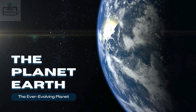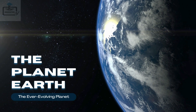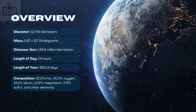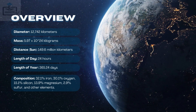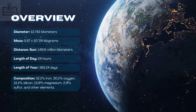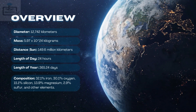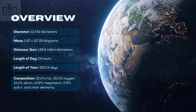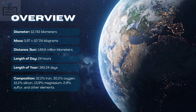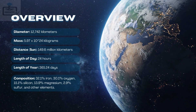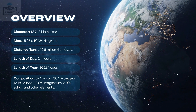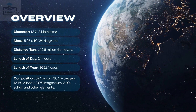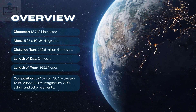3. The planet Earth, the ever-evolving planet. Overview: Diameter — 12,742 kilometers. Mass — 5.97 × 10^24 kilograms. Distance from Sun — 149.6 million kilometers. Length of day — 24 hours. Length of year — 365.24 days. Composition: 32.1% iron, 30.1% oxygen, 15.1% silicon, 13.9% magnesium, 2.9% sulfur, and other elements.